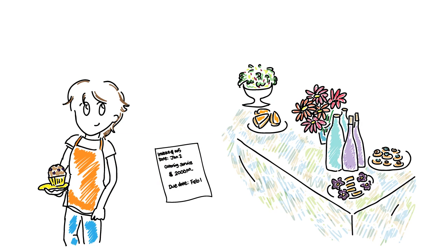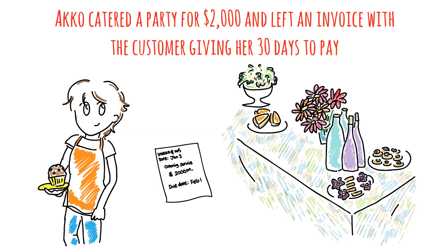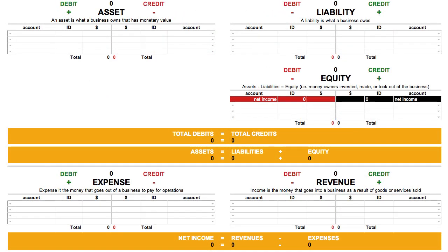Here is an example of using Accounts Receivable. Accrual catered a party, charging $2,000. At the party, she gave the customer an invoice that had to be paid in 30 days. How do we record this? Recording this entry into the Accounting Equation Cheat Sheet would start off like this. We want to increase revenues by $2,000, so we credit revenue — specifically the Catering Sales account. We choose Catering Sales, enter an ID of 1, and enter an amount of $2,000.